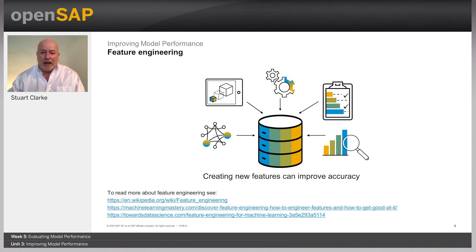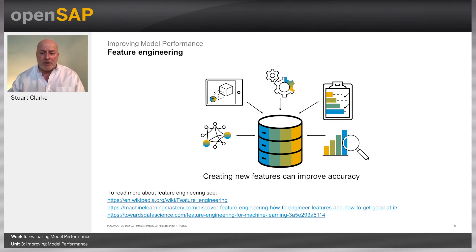In feature engineering, new features — the explanatory variables — are created by trying to extract more information from the existing explanatory variables. These new features may have a higher ability to explain the variance in the training data and improve model accuracy. Feature engineering is highly influenced by business understanding. The feature engineering process can be divided into two steps; step one is feature transformation.